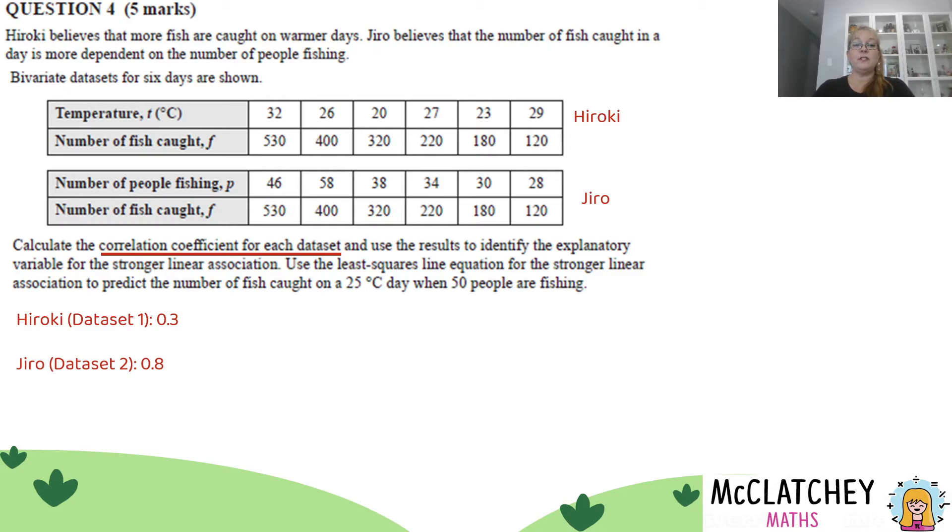Now the question's asking me to use these results to identify the explanatory variable for the stronger linear association. So firstly, I get my first of five marks because I've correctly calculated R for each of those data sets. But now I need to focus on moving on and working out which has the stronger linear association. You'd recall that the closer this is to the number one or negative one, the stronger the association is. Clearly, Jiro has the higher correlation coefficient. So we're going to use the results and identify the explanatory variable. We're looking at this table only.